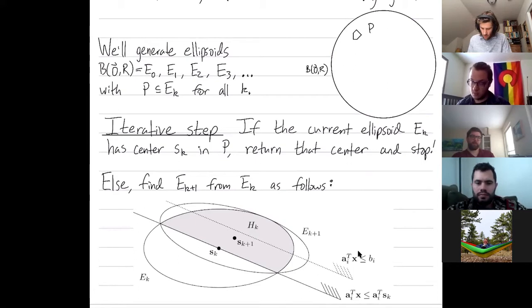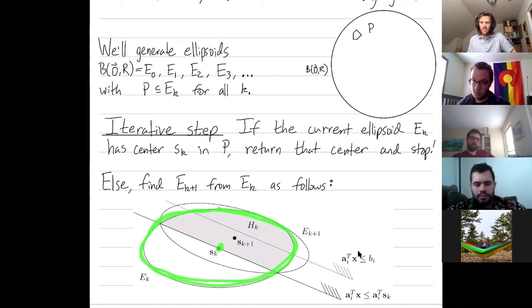Otherwise, we're going to choose a new smaller ellipse of less volume still containing the feasible region. So epsilon k is our current ellipsoid, and we're going to produce epsilon k plus 1, our next one. So we look at the center s sub k of our current ellipsoid. Is it inside the feasible region? If so, return that point, we're done.